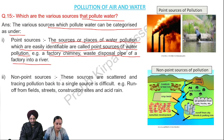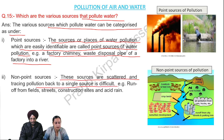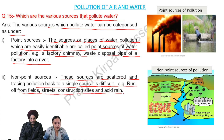Number 2: non-point sources — these sources are scattered and tracing pollution back to a single source is difficult. For example, runoff from fields, streets, construction sites, and acid rain.